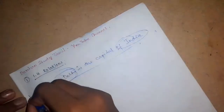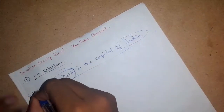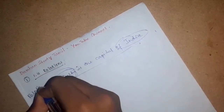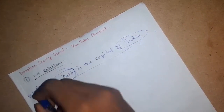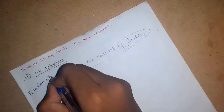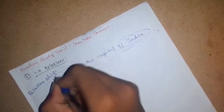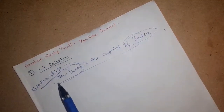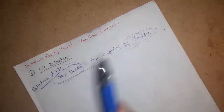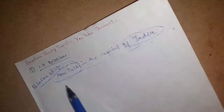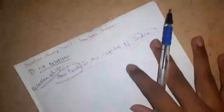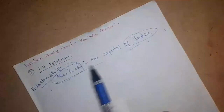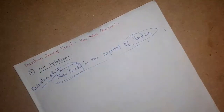This one is a relationship. So if you look at this one — in New Delhi, India, there is one relationship. That one is a relationship. Here is another example.